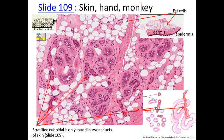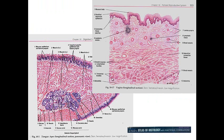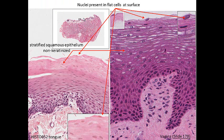Stratified cuboidal epithelium is only found in sweat duct glands — the ducts that take sweat to the surface have more than one layer of cuboidal cells. The tongue and the vagina both have stratified squamous epithelium, but it's non-keratinized — it does not have a stratum corneum on the surface. In some places on the tongue you have projections, especially in cats with rough tongues. Non-keratinized stratified squamous epithelium is noted by nuclei going all the way to the surface.